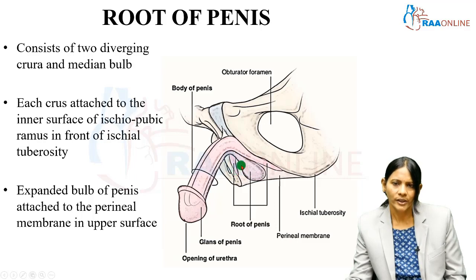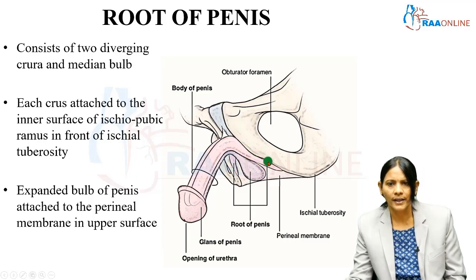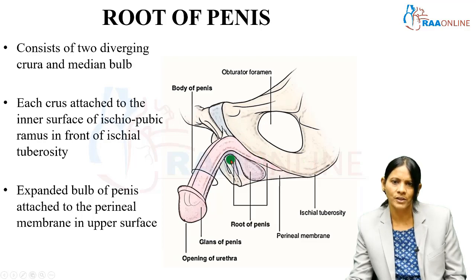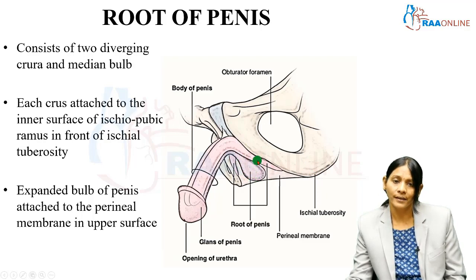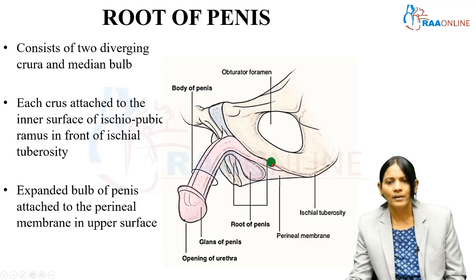Together, the two crura of the penis and the bulb constitute the root of the penis. The crura are attached to the ischiopubic ramus — the pubic part and the ischial part of the ramus — just anterior to the ischial tuberosity. The bulb of the penis, on the other hand, is attached to the perineal membrane, which forms a partition in the perineal floor.